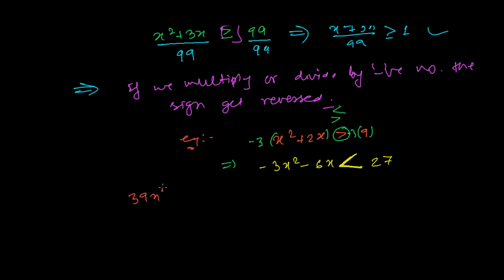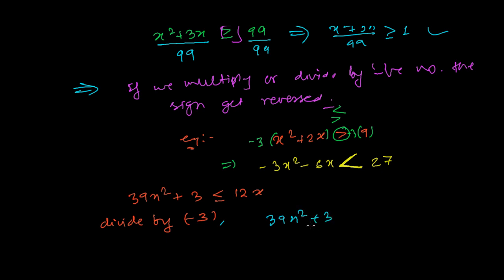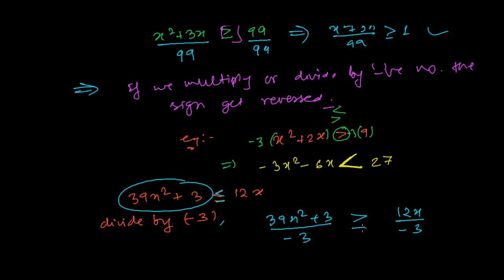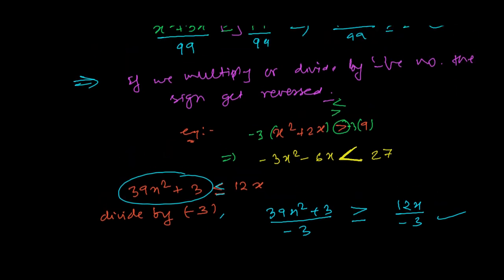Let's say I have 39x² + 3 ≤ 12x. If I divide both sides by -3, the sign will automatically change. It becomes (39x² + 3)/(-3) ≥ 12x/(-3). When dividing by a negative number, the less than or equals to sign becomes greater than or equals to. This is the second rule.